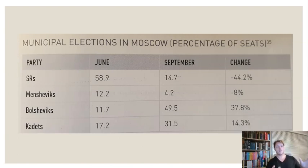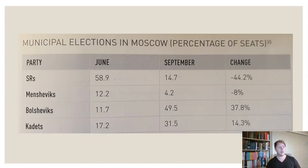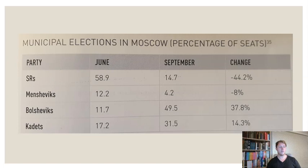In this graphic, we have a short table of the municipal elections in Moscow showing the percentage of seats. Looking at the change from June to September, you can see a really radical shift. The Socialist Revolutionaries lost a lot of power — originally a left-wing party, but during 1917 many moved to the middle or the right, becoming less popular particularly with the working people in the Soviets. The Mensheviks also lost about 8% of seats, whereas the Bolsheviks rose almost 40% in their seat percentage, and the Cadets rose a little as well.